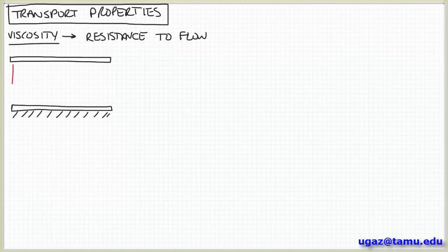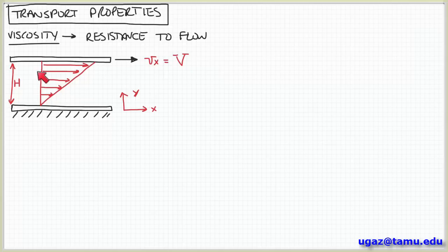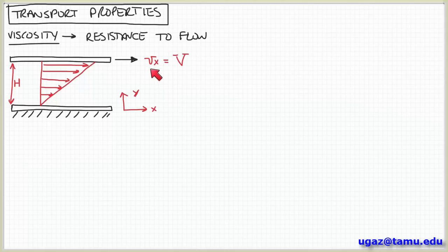We can think about that a little more precisely for the purposes of this course. I'm going to draw a simple geometry here — two flat plates that are separated by some distance h. The bottom plate is stationary and the top plate is free to move, and in between these plates is some fluid. The top plate is moving at some velocity capital V. I've drawn a coordinate system such that the forward direction is x and y is positive from the bottom plate upward. So the x component of velocity v sub x is capital V.